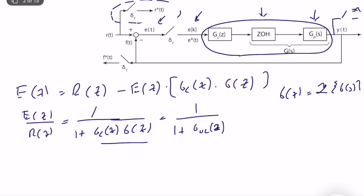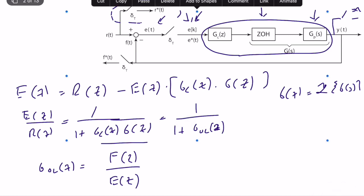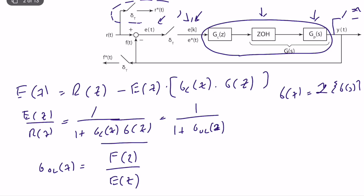What is G_OL(z)? When everything is on the feedforward path, we simply multiply them. In general, G_OL(z) is defined as F(z)/E(z) — the dynamics from the error signal to the feedback vector. It is the transfer function from the discretized error signal to the discretized signal entering the negative feedback operation.